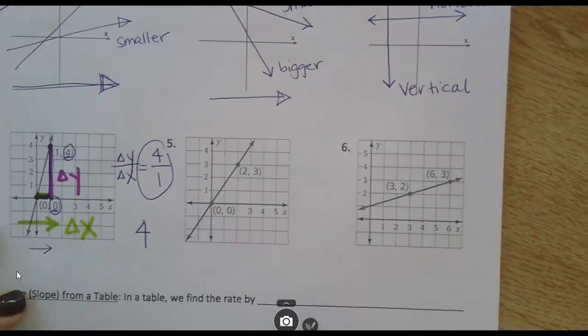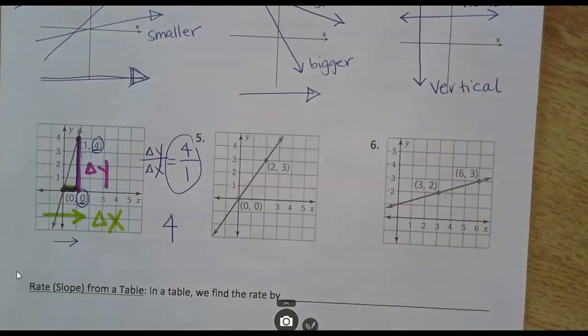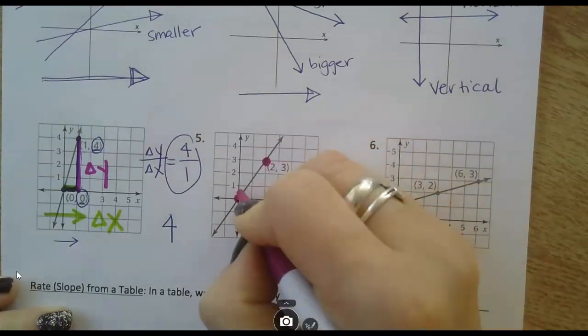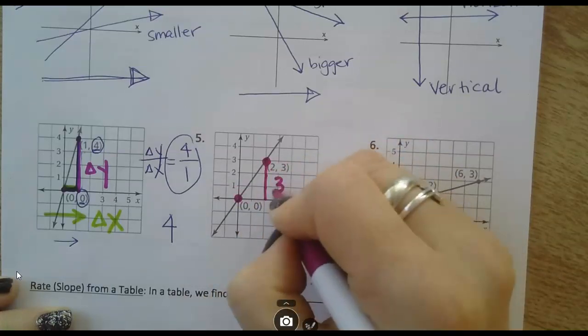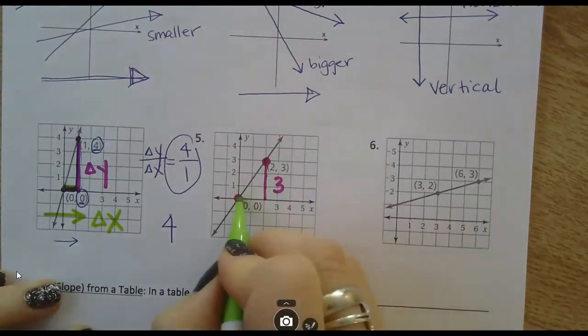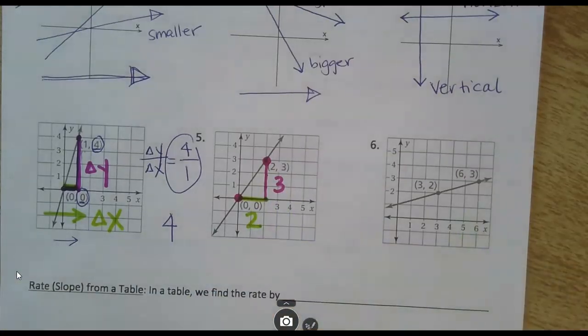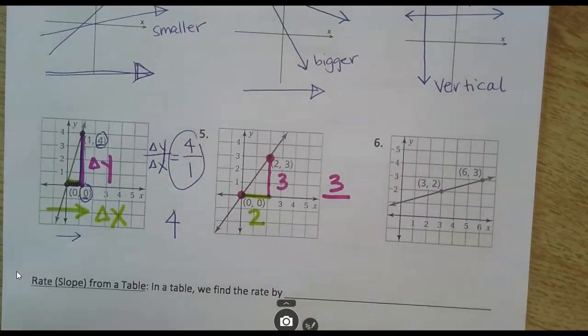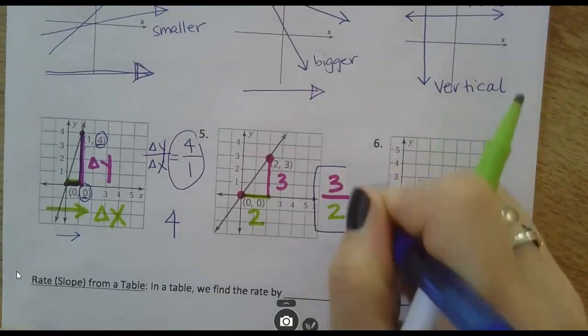Let's look at the next one. I'm going to find my change in y. From here to here, it went up one, two, three. So my change in y is three. My change in x, I went over from here to here, it went over two. And when I write change in y over change in x, I'd get that simplified fraction. That is my slope, three over two.